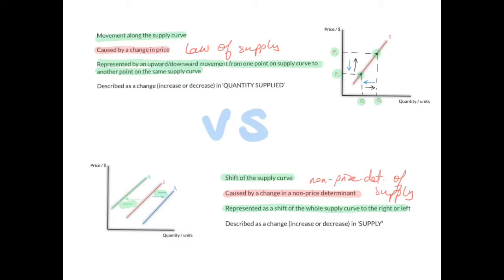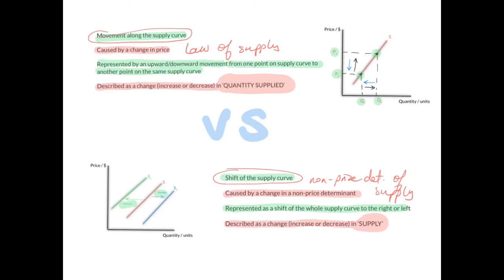A movement along the supply curve is described as a change — increase or decrease — in quantity supplied. Whenever there's a movement along, we use the words 'quantity supplied.' A shift of the supply curve is described as a change — increase or decrease — in supply; you use the word 'supply' when there is a shift. I hope this helps you explain the difference between a movement along the supply curve and a shift of the supply curve. Thank you very much, I hope you enjoyed this review.